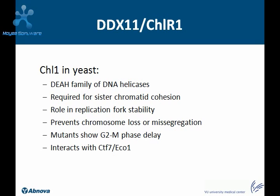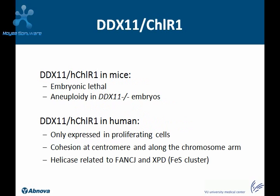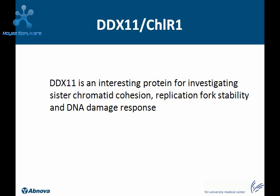About the mammalian protein, much less is known. In an attempt to make DDX-11 knockout mice, it was shown that these mice are embryonically lethal, and aneuploidy was observed in the embryos. In human cells, the protein is only expressed in proliferating cells, and is involved in cohesion at the centromere and along the chromosome arms. DDX-11 is a helicase related to FANCJ and XPD because of its iron-sulfur cluster. FANCJ and XPD are both genes involved in other chromosomal instability syndromes. From this, we can conclude that DDX-11 is an interesting protein to investigate sister chromatid cohesion, replication fork stability, and DNA damage response.